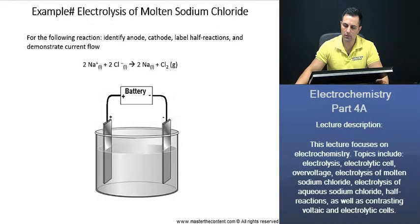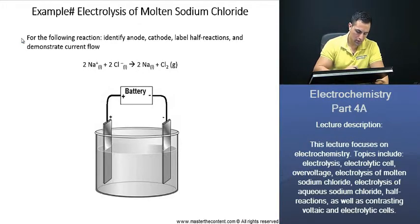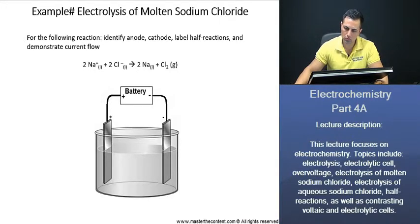Your career, our passion. The electrolysis of molten sodium chloride. And typically, you're going to see electrolysis reactions in a single beaker, as we see here. For the following reaction, we need to identify the anode-cathode label-half reactions, and we're going to demonstrate the electron flow. Let's go ahead and label our anode and our cathode first.